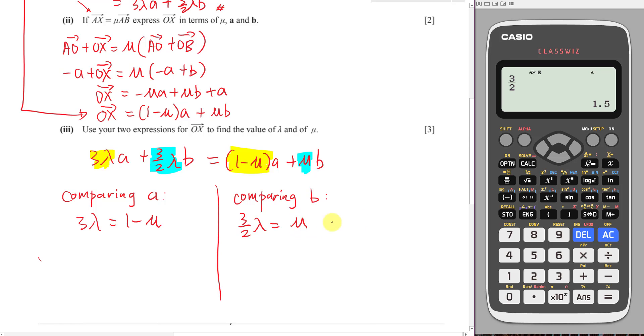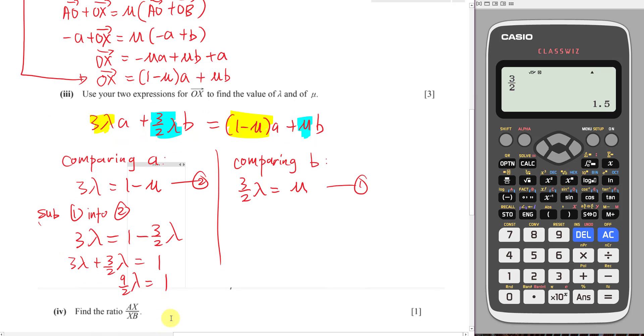So over here I will call this one the first equation, this one the second equation, then I will sub the first equation into the second equation. Because this one mu is already the subject, so I can straight away solve it. Mu equals 1 minus 3 over 2 lambda. So 3 lambda minus 3 plus 3 over 2 lambda equals 1. Then this one will be 9 over 2 lambda equals 1. Then I should be able to get my lambda value here, which is 2 over 9.